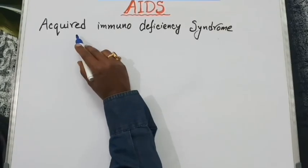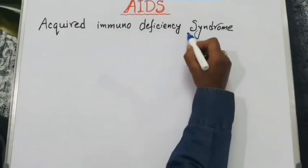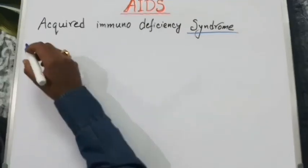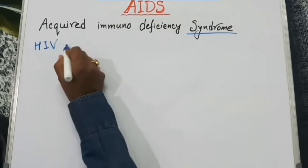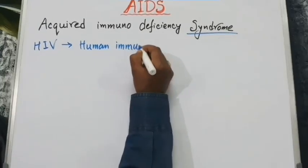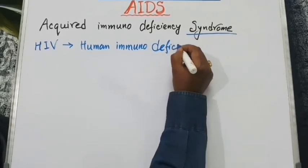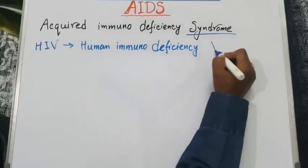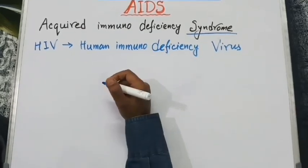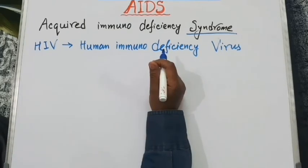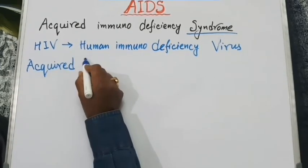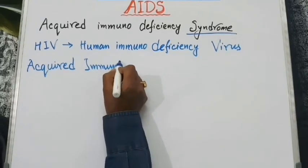The full form of AIDS is Acquired Immunodeficiency Syndrome. This disorder is better termed as syndrome because it has several manifestations in human bodies. This disease is actually caused by HIV virus — Human Immunodeficiency Virus. This is actually a retrovirus. This virus destroys the cellular components of the immune system in our body, specially the components of Acquired Immunity.